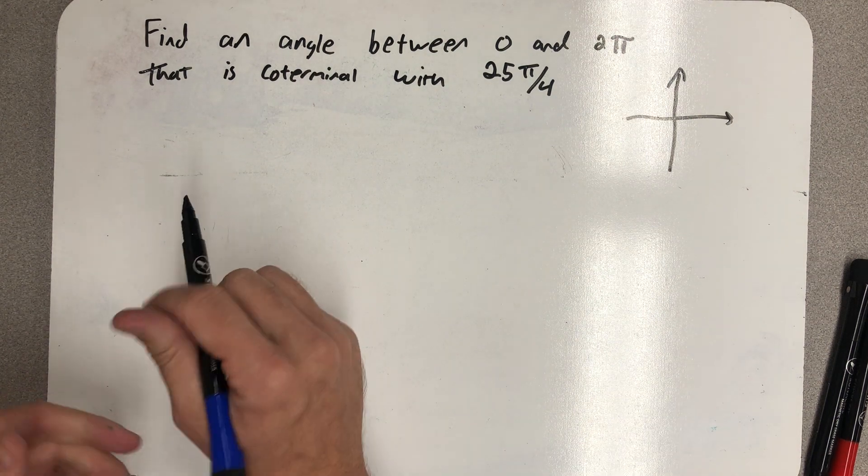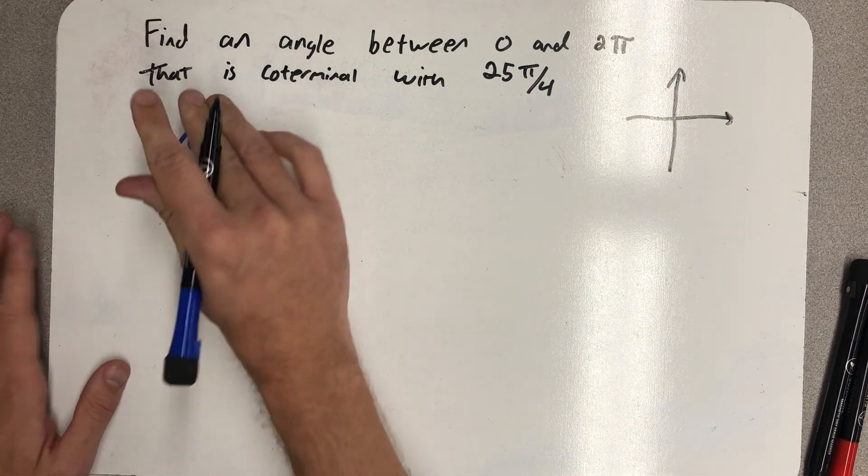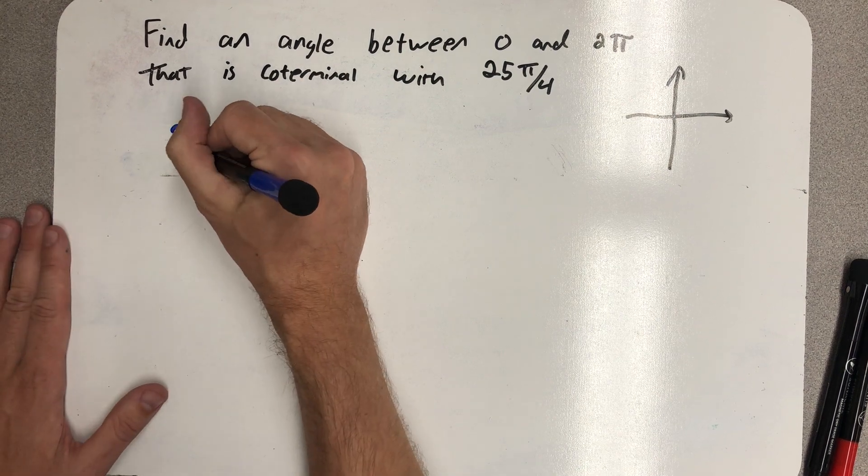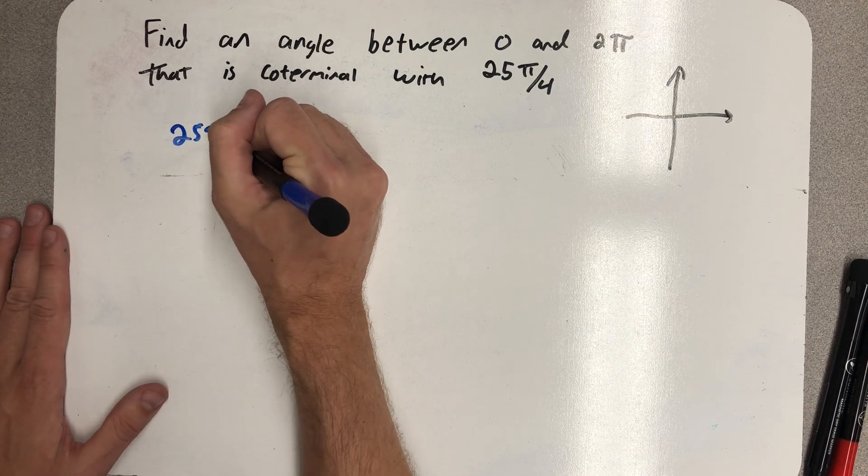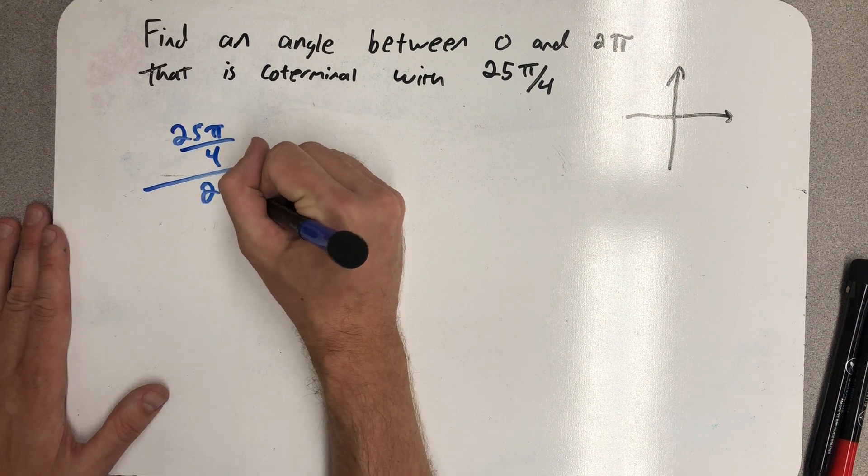So the first thing I want to do is I actually want to know about how many full revolutions 25π fourths is. So I'm going to imagine dividing that by 2π.